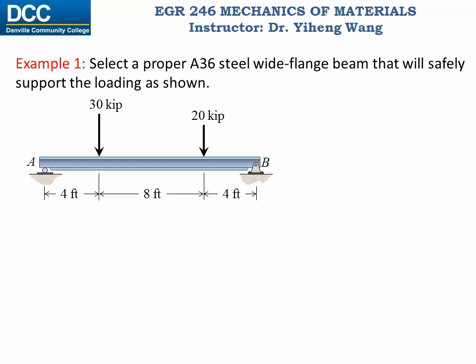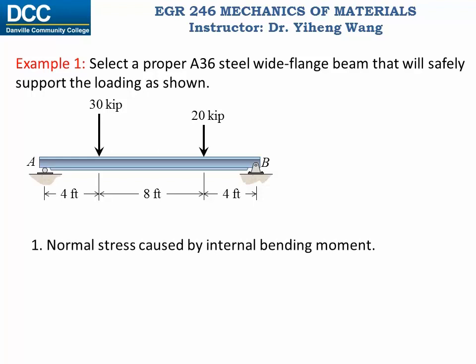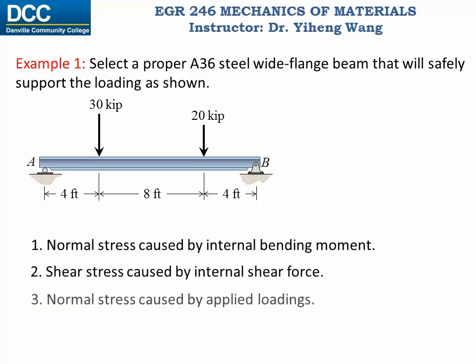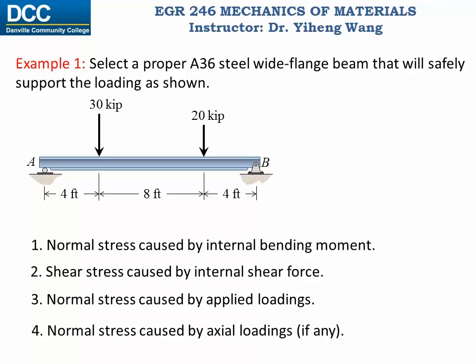Based on our previous study, the key parameter in our consideration should be the stresses developed in the beam because of the external loadings. We have the normal stress caused by the internal bending moment — the bending stress — and shear stress caused by the internal shear force. There is also normal stress caused by the applied loadings, in this case the 20 kilopounds and 30 kilopounds of vertical forces. In some cases a beam is also subjected to axial loadings, but in our example here we don't have any.